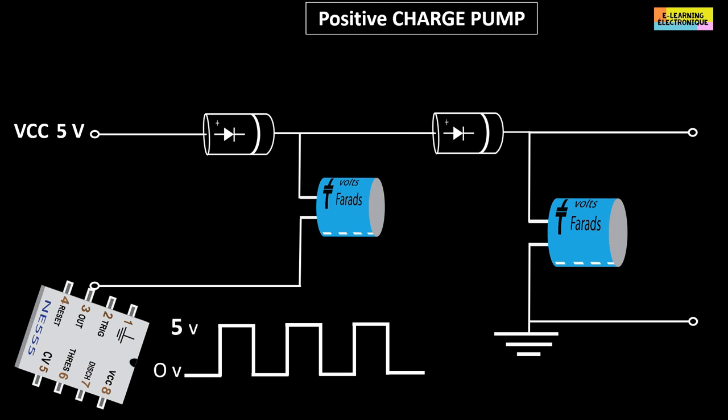When the signal is at a low level, therefore 0V, at the output of the first diode we find the 5V corresponding to VCC. This value is then at the output after the second diode. The output capacitor is charged to this value.